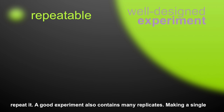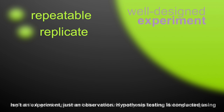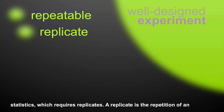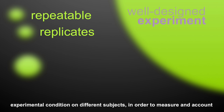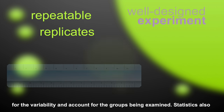A good experiment also contains many replicates. Making a single observation of a phenomenon isn't an experiment, but just an observation. Hypothesis testing is conducted using statistics, which requires replicates. A replicate is the repetition of an experimental condition on different subjects, in order to measure and account for the variability within the groups being examined.